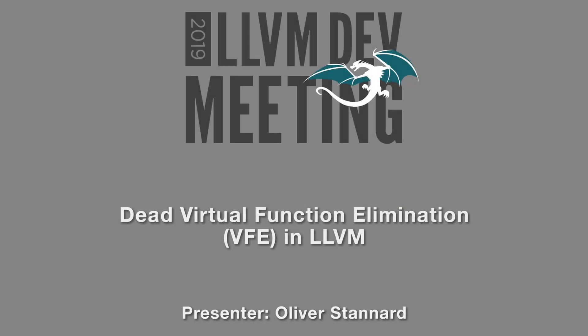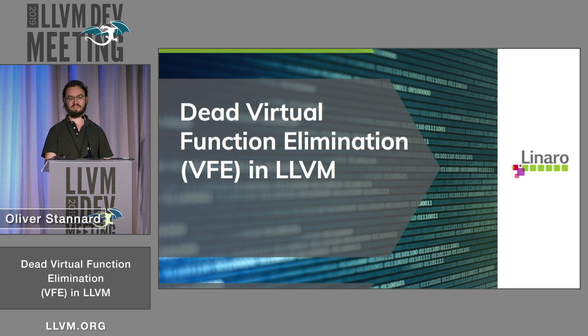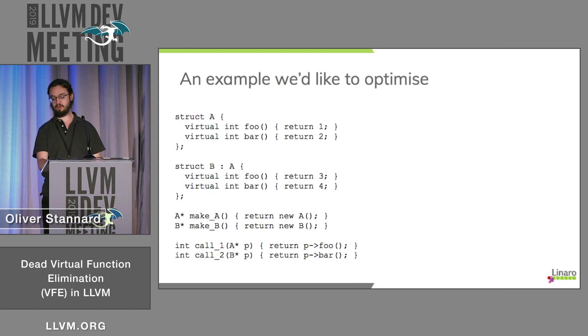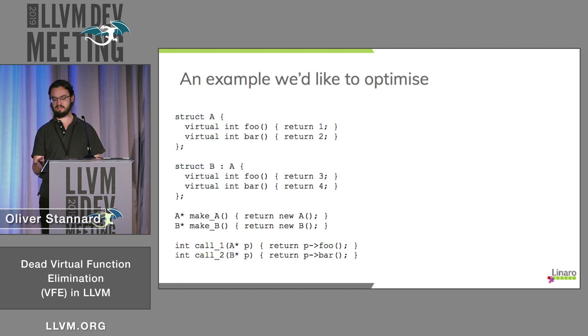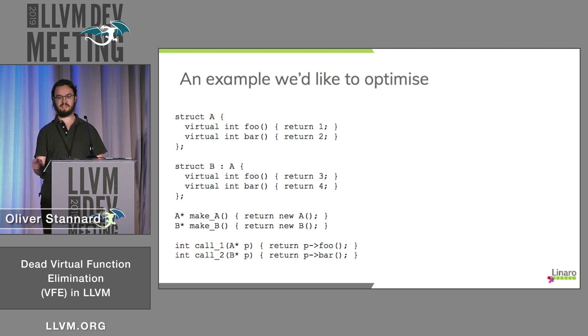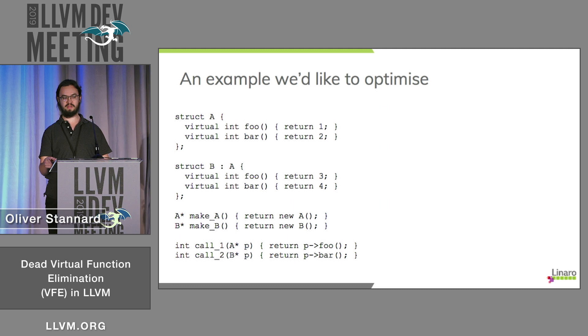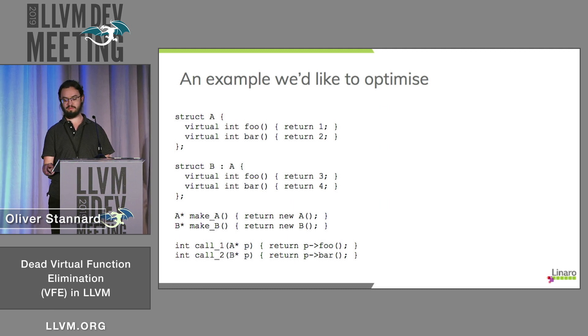I'm going to talk about dead virtual function elimination, which is an optimisation that I've recently added to LLVM. Here's an example of some code that we'd like to be able to optimise. We've got a struct with two virtual functions, a second one which inherits from it and overrides them both, and two virtual function calls down at the bottom.